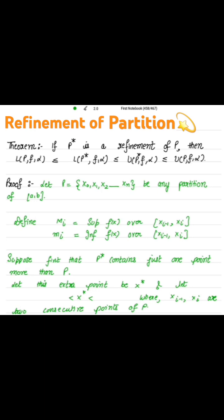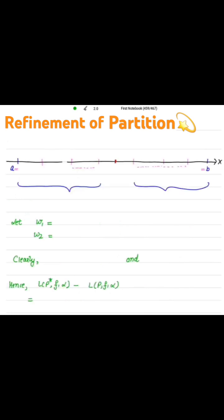Suppose first that P* contains just one point more than P. Let this extra point be x*, and let x* lie between xi-1 and xi, where xi-1 and xi are two consecutive points of partition P. In between these two points is the point x*. If you look at this figure...